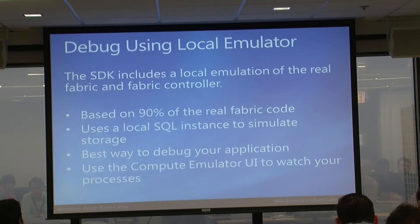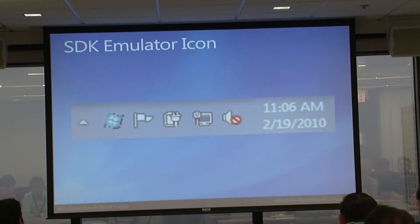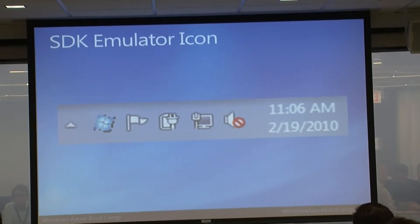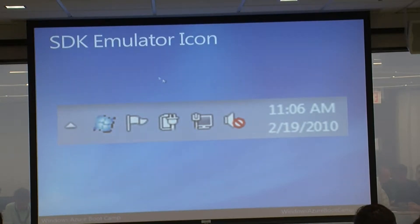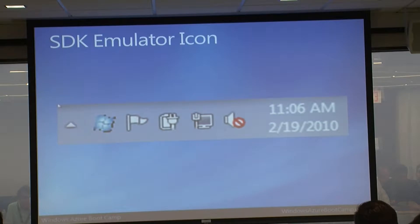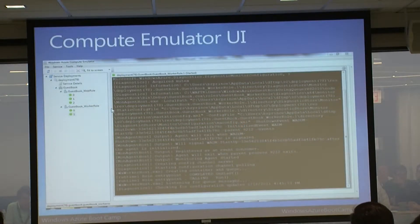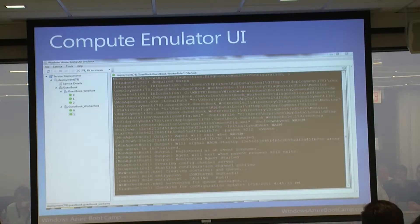In the configuration settings you can see a data connection string. Right now I'm setting it to use local development storage, but when pushing live, I'd change it to include my account name, account key, and other info to access my Azure account in the cloud. The SDK includes a local emulator - a cloud on your desktop - that uses a good portion of the real fabric control used out in the cloud.